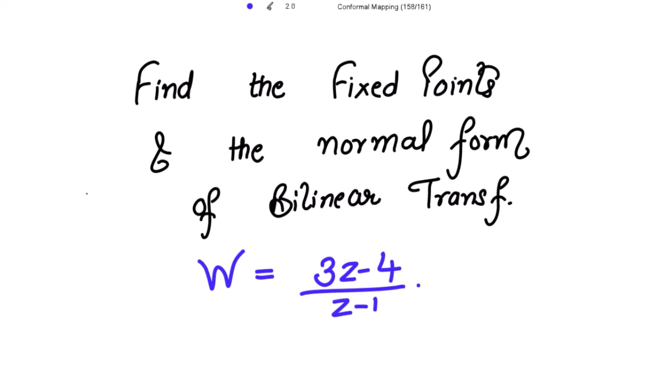To find the fixed points and the normal form of the bilinear transformation w = (3z - 4) / (z - 1).